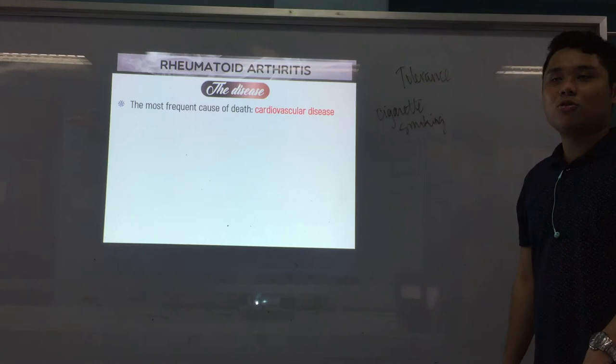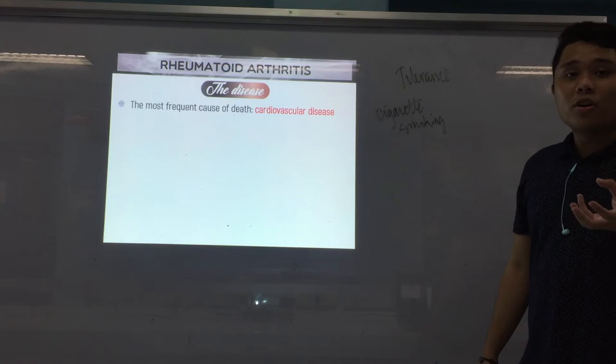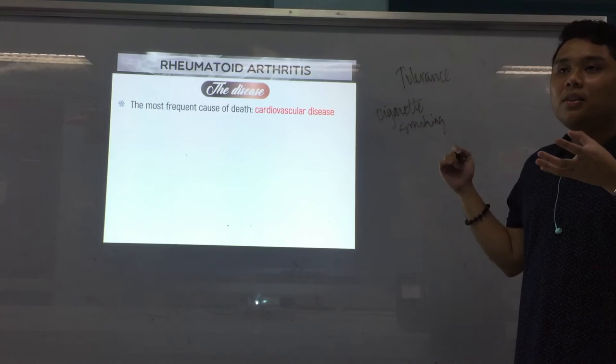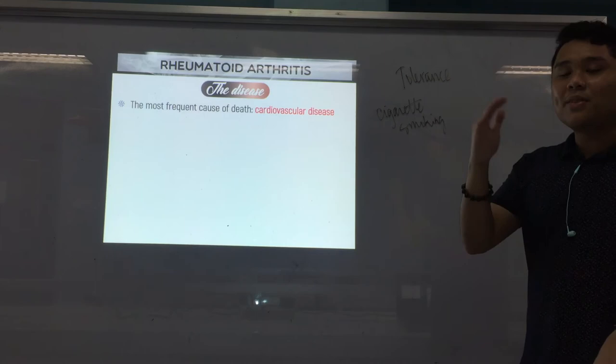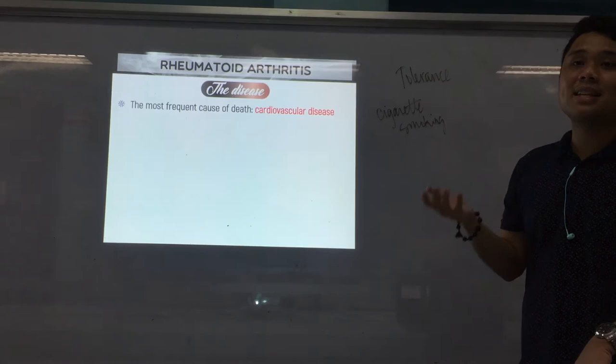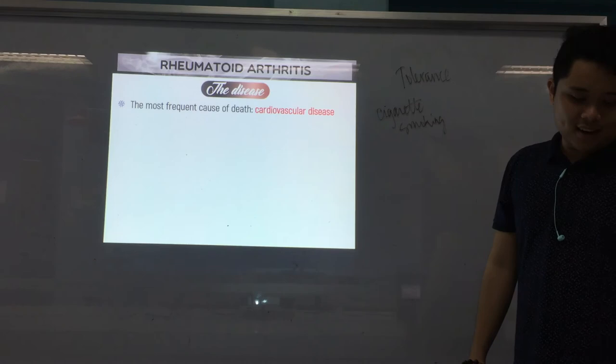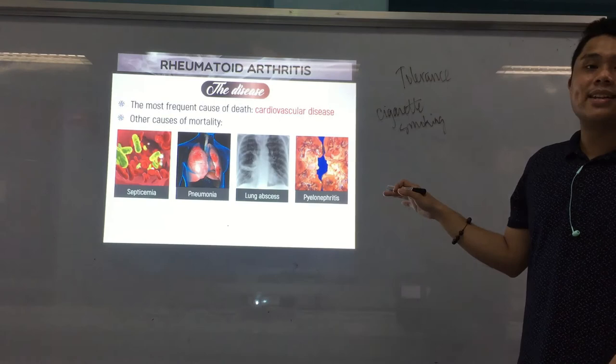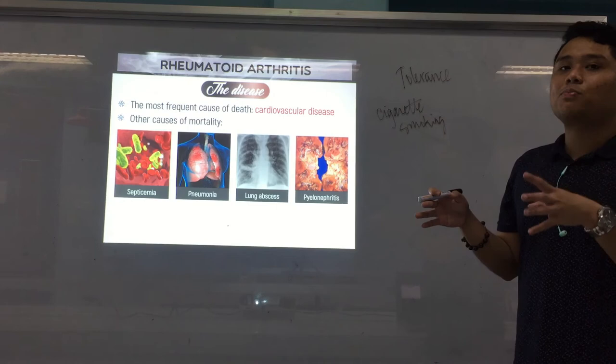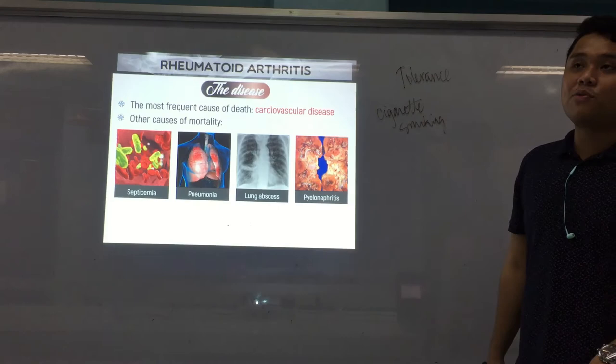The most common cause of death is cardiovascular disease. Because RA is an inflammatory condition, chronic inflammation raises your acute phase reactants like CRP, which can also lead to the development of coronary heart disease and affect other organs. Other causes of mortality include septicemia, pneumonia, lung abscess, and pyelonephritis — because the disease is systemic and can affect other parts of the body, primarily due to its chronic inflammatory nature.